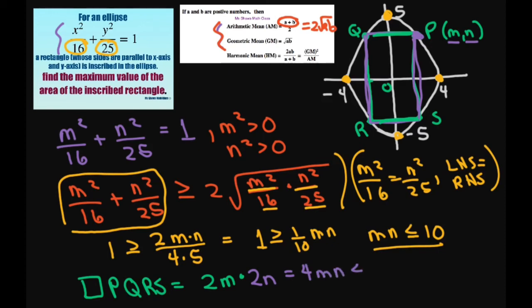Which is going to be less than or equal to 4 times 10, because m n is 10. So this is going to equal 40. So this is your maximum value of the area. 40 is your answer.